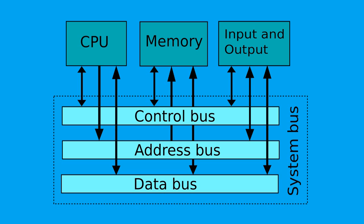The data bus is a bi-directional bus which transfers instructions to the processor. It is the computer hub system and it transfers data between components of the motherboard.